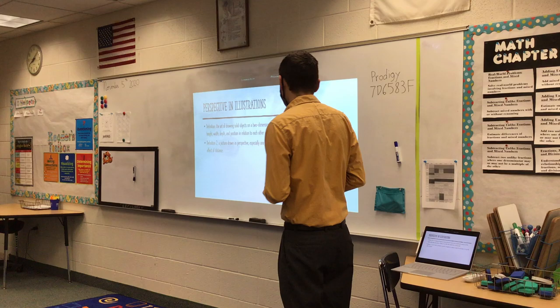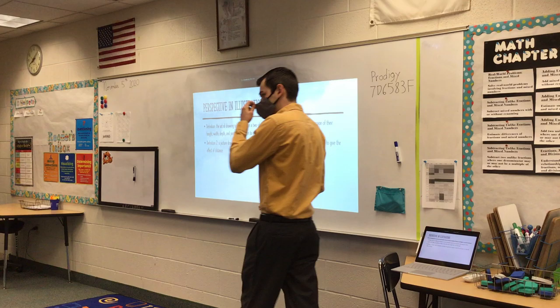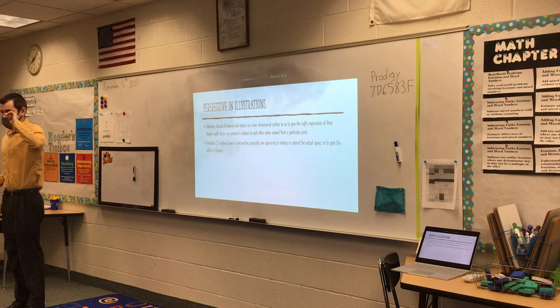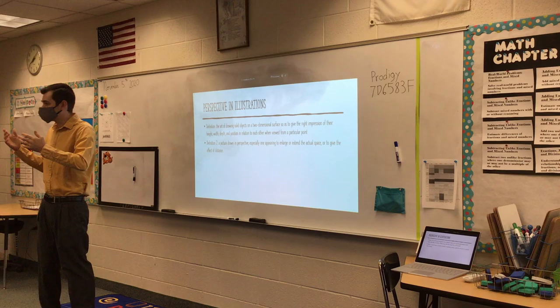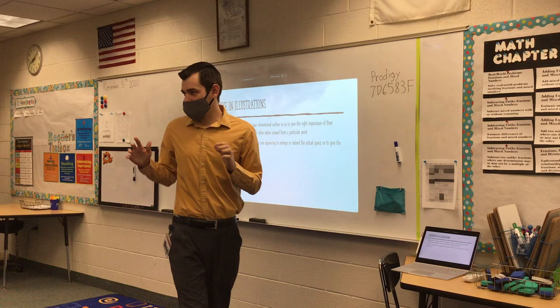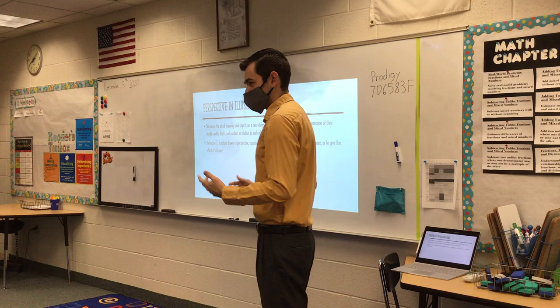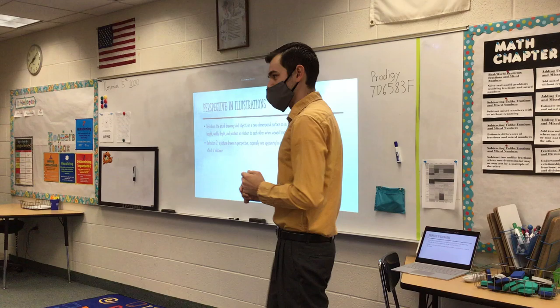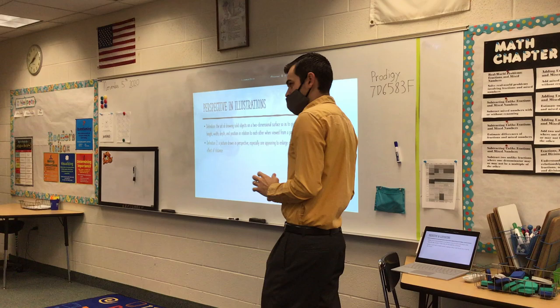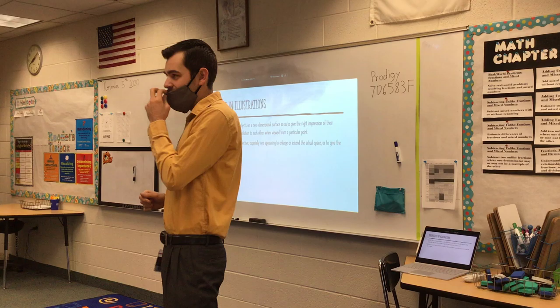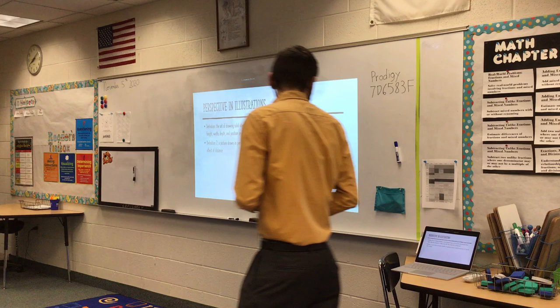Definition two: a picture drawn in perspective, especially one appearing to enlarge or extend the actual space or to give the effect of distance. So, for example, in a picture, maybe you have somebody far away from you — you're going to draw them very small in order to give that illusion that they are far away. Have you guys ever seen those sidewalk artists with chalk who make it look so realistic that people think it's a pit they're going to fall into? So you can create the illusion of depth and trick people's eyes. Some artists get very good at that.